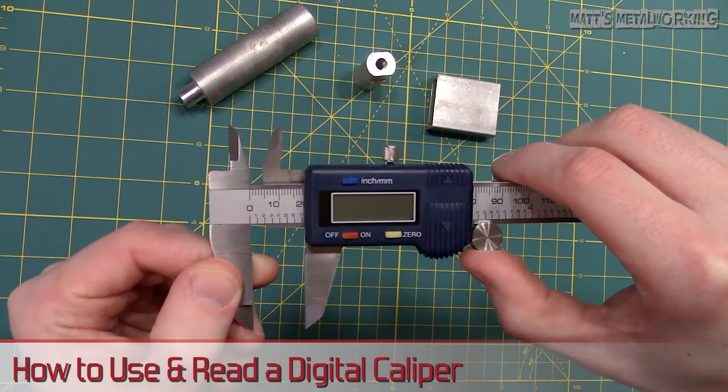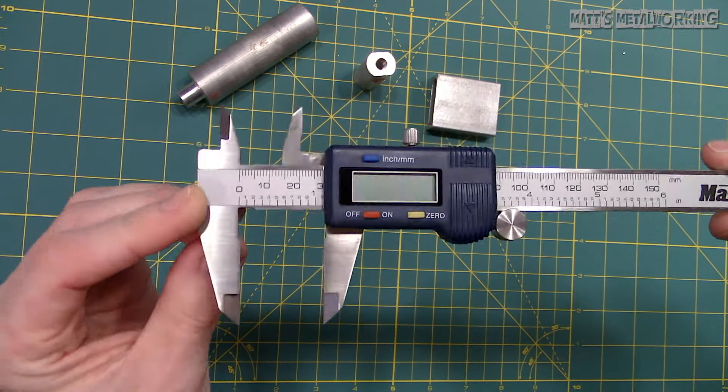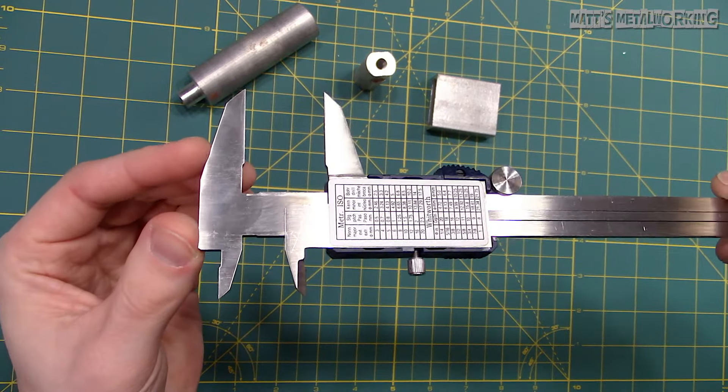A caliper can take measurements in four different ways using the outside jaws, inside jaws, depth probe and using the step.